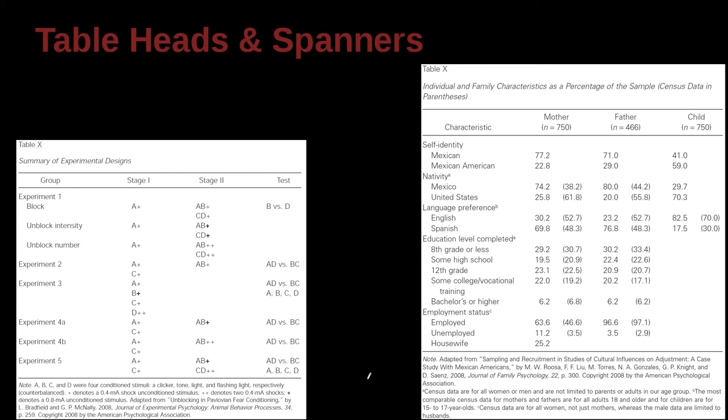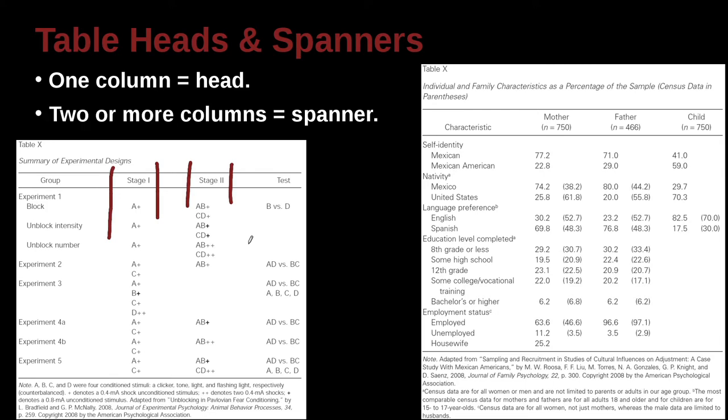Let's look at table headers and spanners. So here we have this idea of the one column, one head. Very straightforward. So here we have this example here. This is a column, and that's stage one. This is a column, that's stage two. That is really straightforward and easy to understand. Two or more columns together, that's going to be a spanner. And in this case, we can see that over here, if you look here, we have two columns, don't we? And then here are another two columns, and here are another two columns. Because those two columns are different information. In this case, the information is the mean, I think, and then the standard deviation.